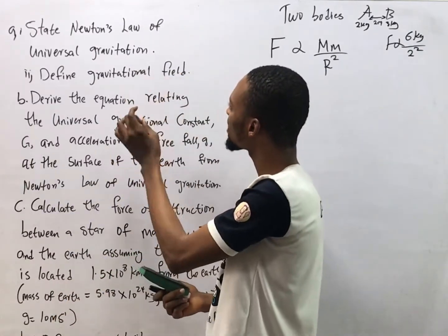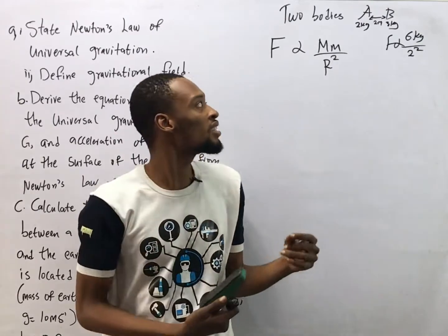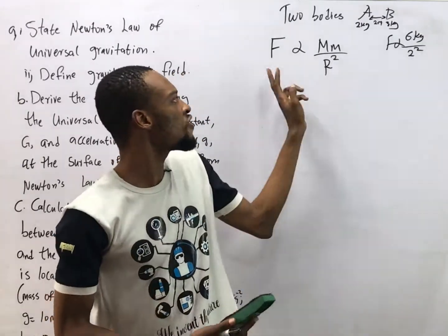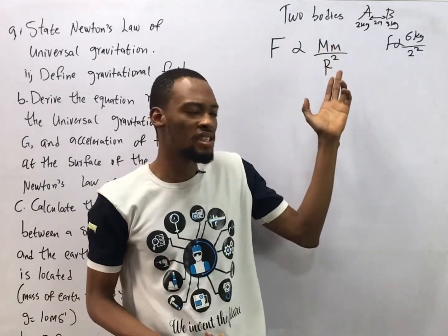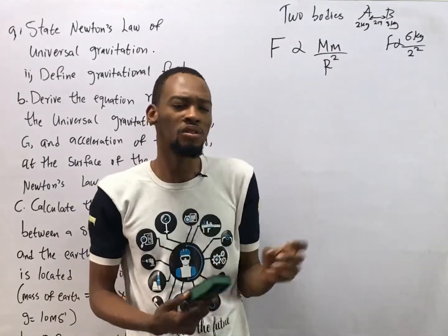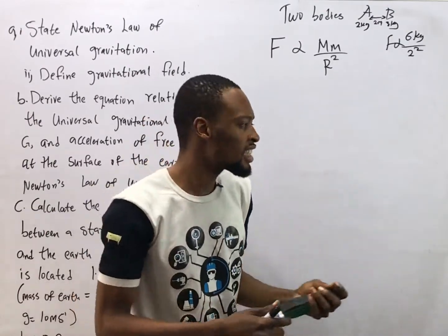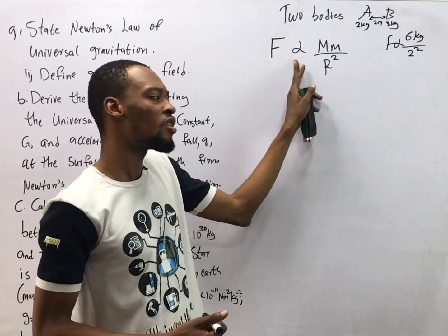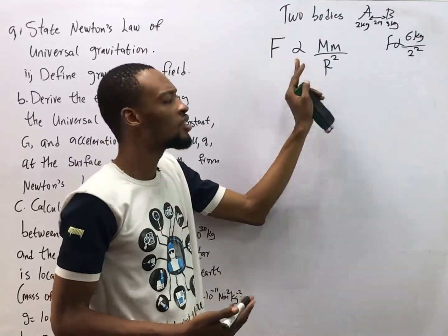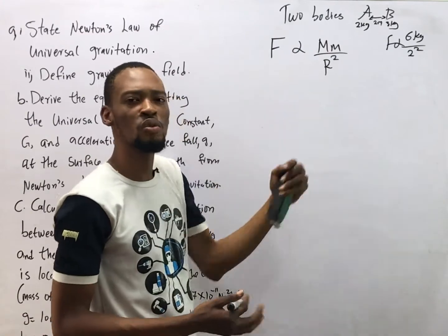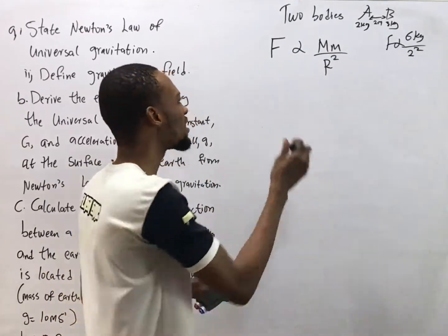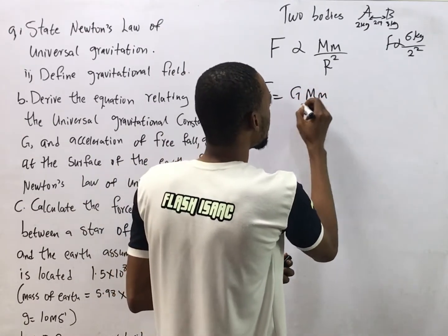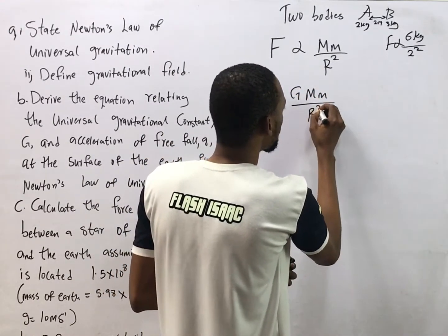For your exam, simply state: Newton's Law of Universal Gravitation states that any two bodies in the universe are attracted to each other with a force that is proportional to the product of their masses and inversely proportional to the square of their distance apart. In mathematics, we change the proportionality to an equality by introducing a constant, so the force equals G·m1·m2 over r squared.